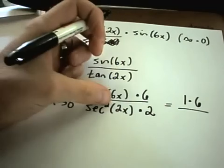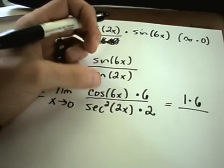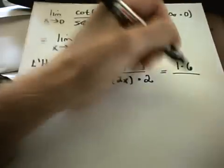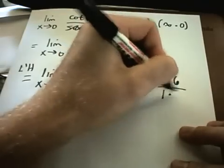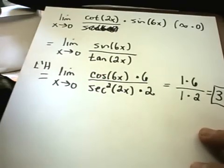You'll get secant squared of 0. So secant of 0, that's 1 over cosine of 0. Cosine of 0 is 1. So secant squared of 0 is also going to be 1. So we're simply left with 1 times 2, or 3 is our solution in this problem.